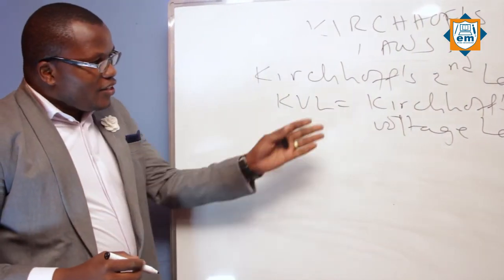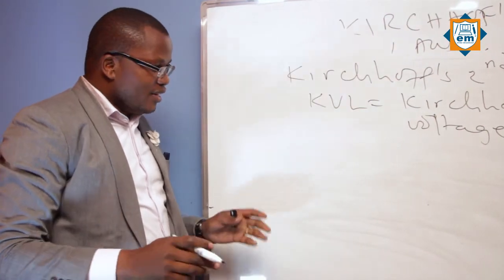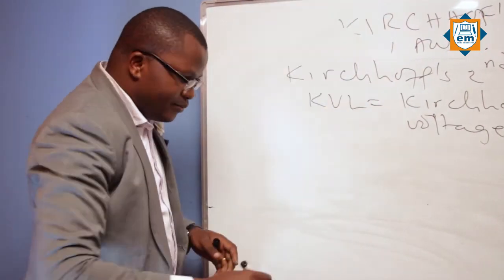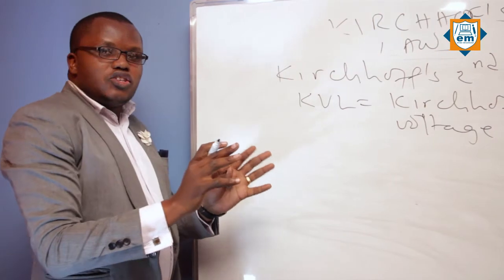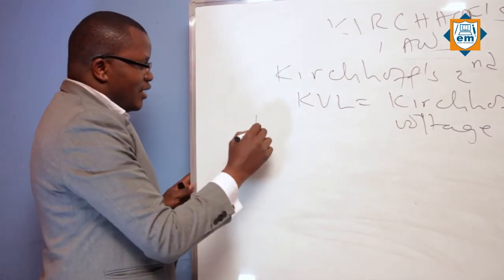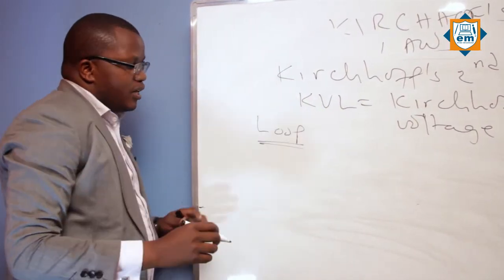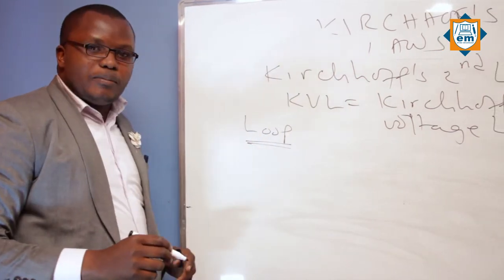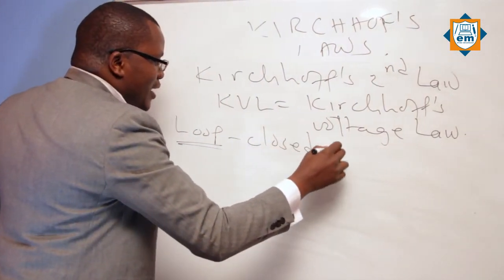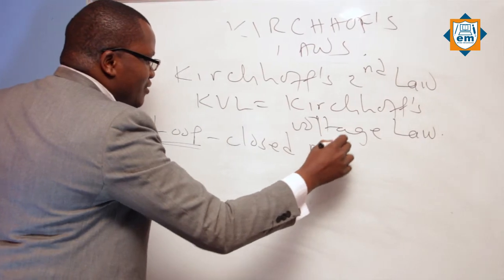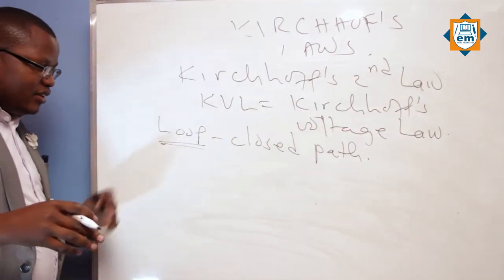Sasa tuangalie Kirchhoff voltage law yenyewe inasemaje. Kwanza, kabla sijaeleza Kirchhoff voltage law, naomba tuangalie term moja inayoitwa loop. Tukisema loop, tunamaanisha kwamba ni closed path — nikisema loop, inamaanisha it's a closed path. That is loop.